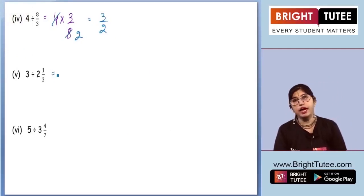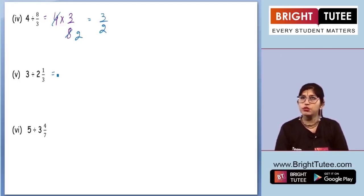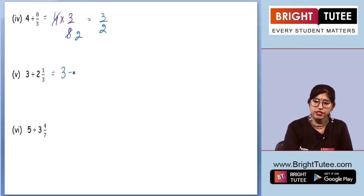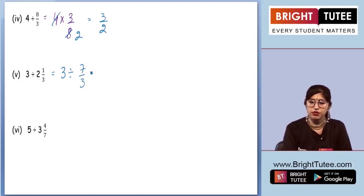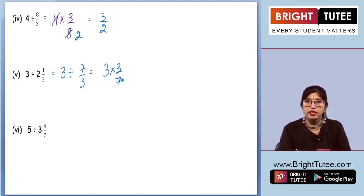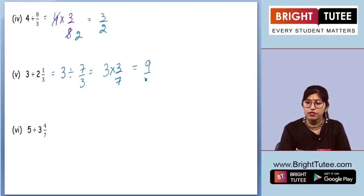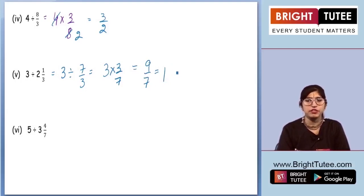Now we have a whole number and a mixed fraction. We write 3 divided by, then convert the mixed fraction to an improper fraction: 3 times 6 plus 1 is 7 by 3. Now we do the reciprocal of 7 by 3, which is 3 by 7, and multiply. Multiplying the numerators and denominators gives us 9 by 7. Converting to a mixed fraction, we get 1 and 2 by 7.